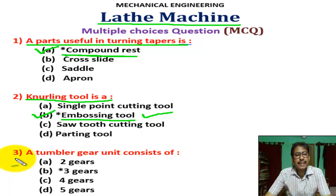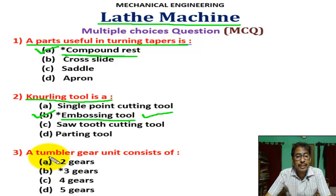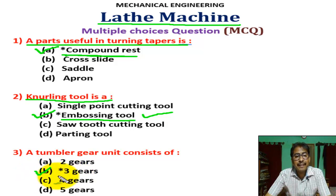Question number three: a tumbler gear unit consists of? There are four options. Correct answer is B — three gears. A tumbler gear has three gears.